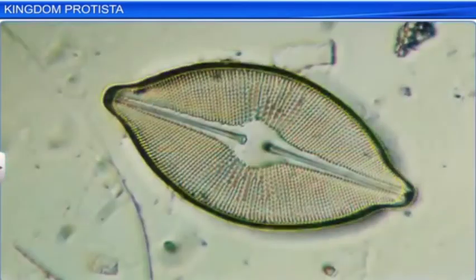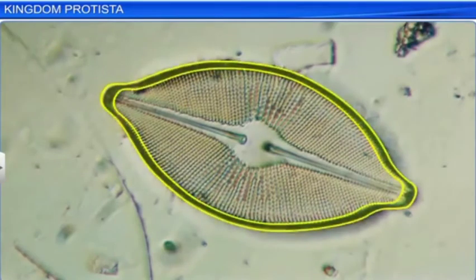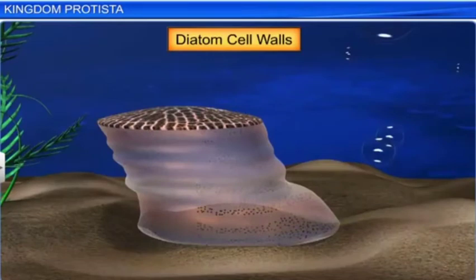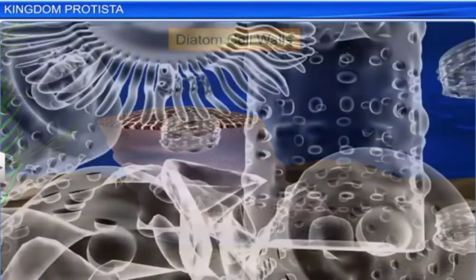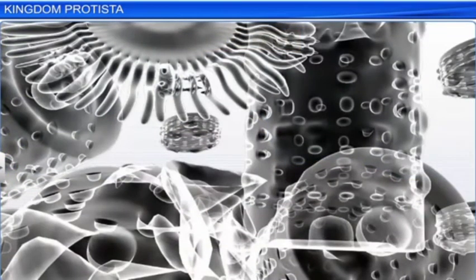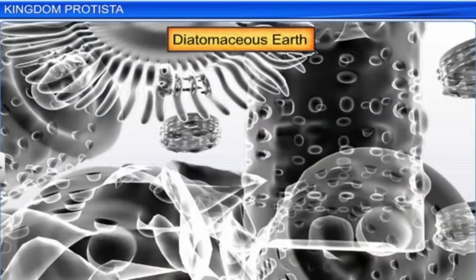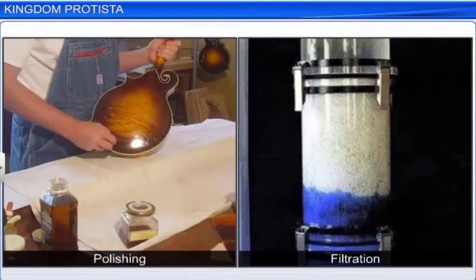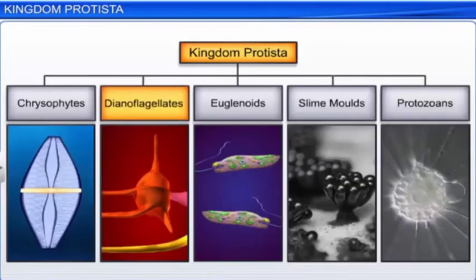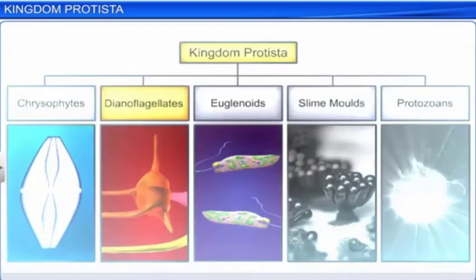The cell wall of diatoms are embedded in silica, making them indestructible. Diatoms, therefore, manage to leave behind a large amount of their cell wall deposits in their habitats. The fossilized remains of diatoms form diatomaceous earth, and it can be used for various purposes like polishing and filtration of oils and syrups.